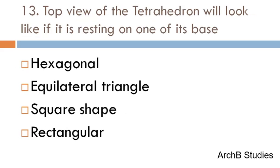The top view of a tetrahedron, when resting on one of its bases, will look like — hexagonal, equilateral triangle, square, or rectangular? The correct answer is equilateral triangle.